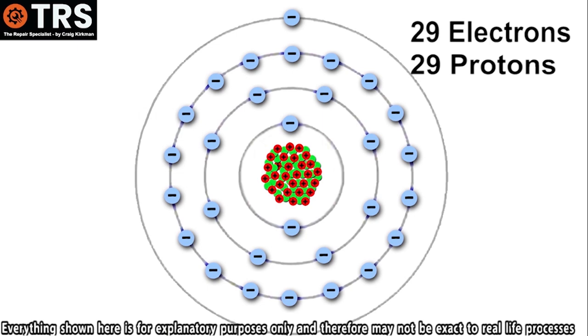So with all the 29 negatively charged electrons and the 29 positively charged protons, this means that the overall charge of this atom is neutral, because both charges, although being opposite, are equal in strength.